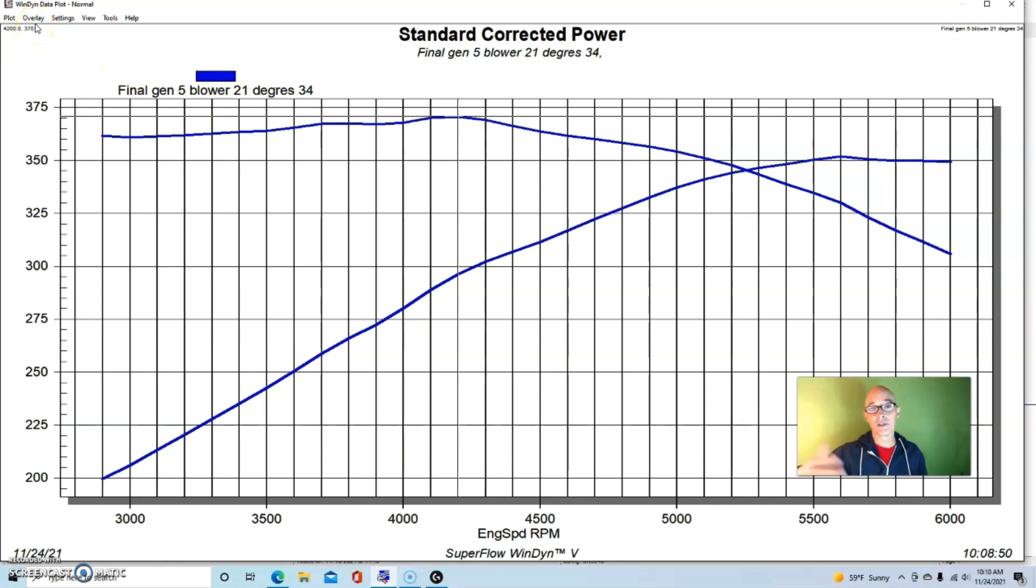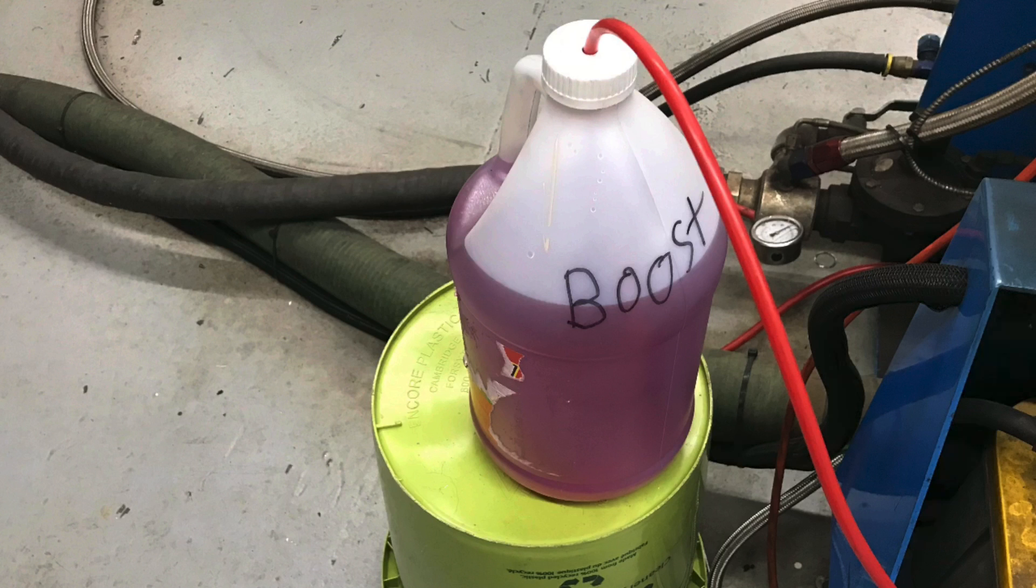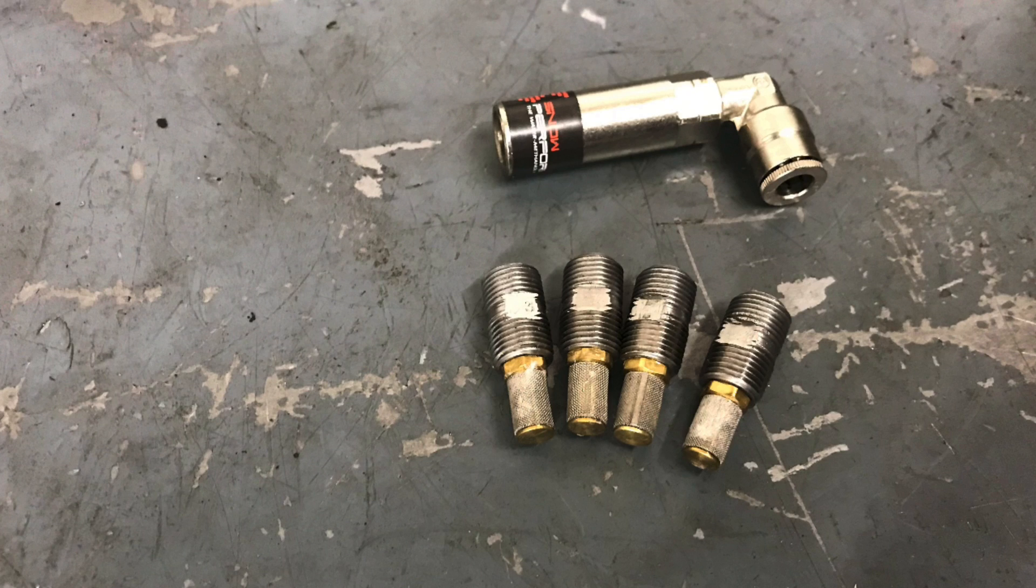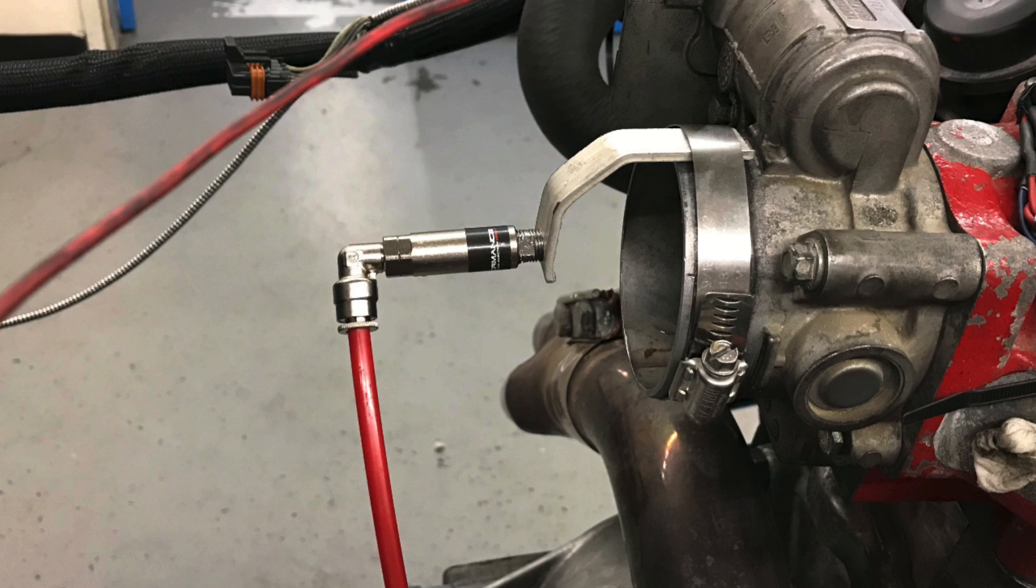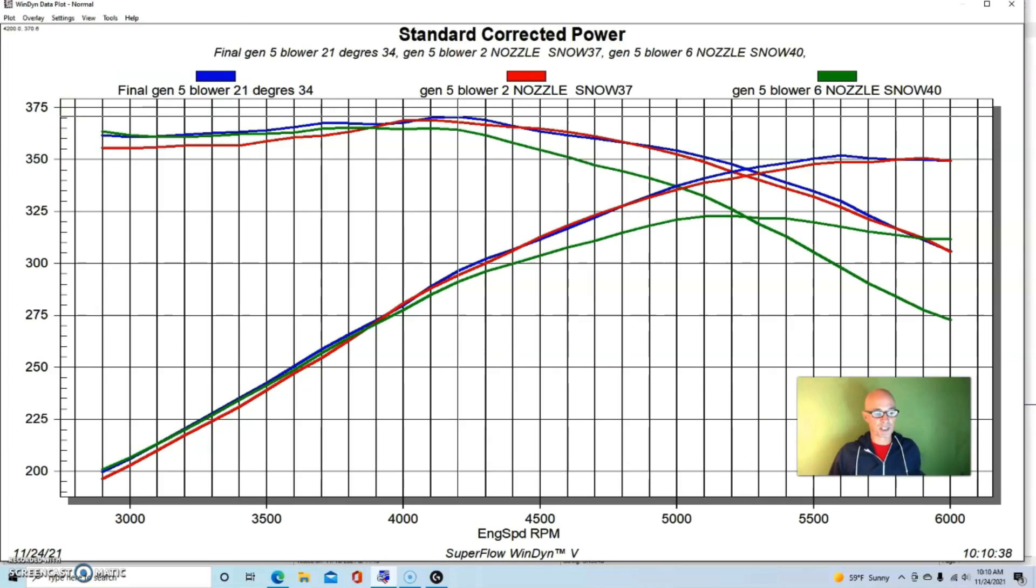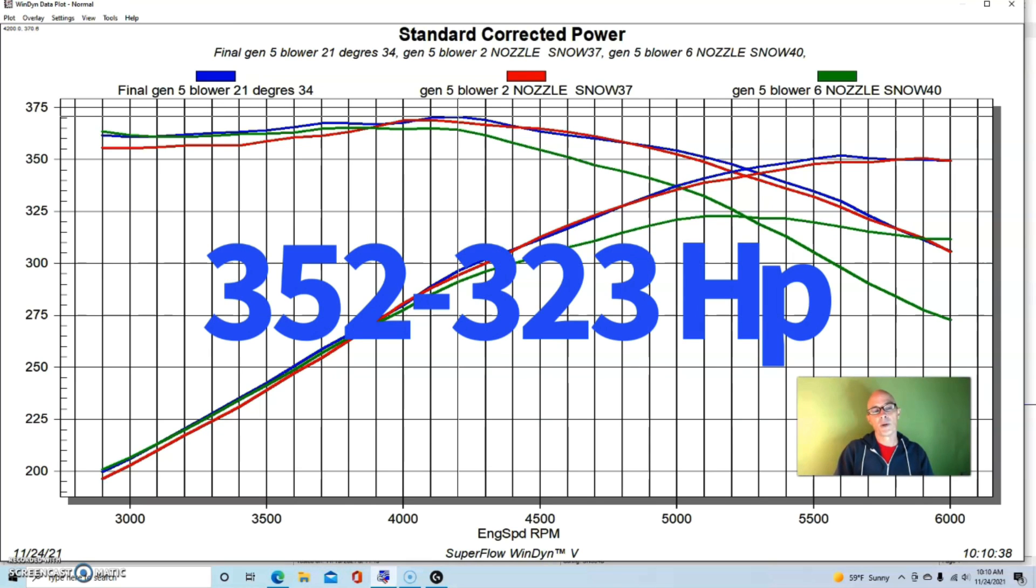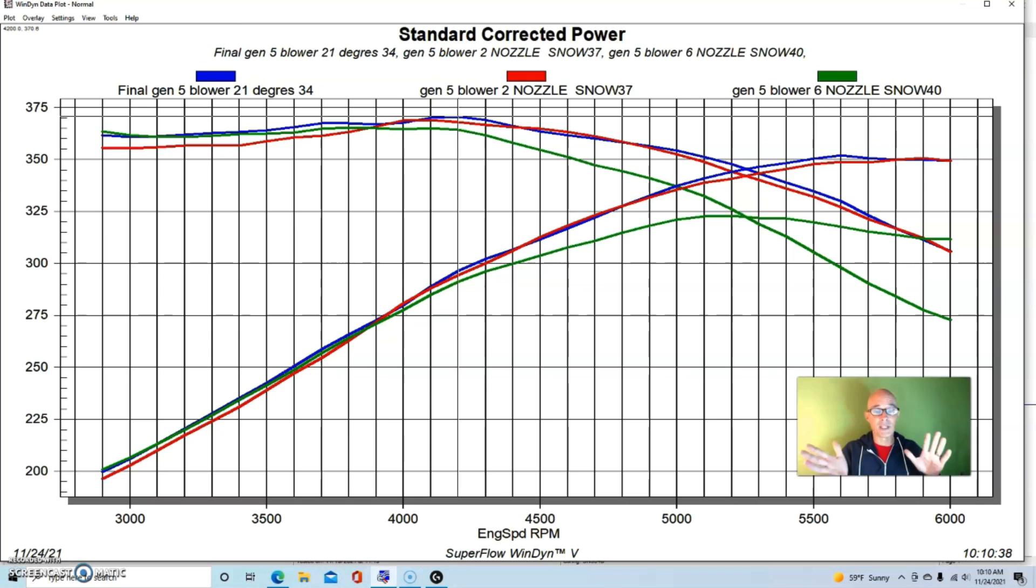And here's what happened after we added the Snow Performance Water Meth setup with the Boost Juice, and we selected a number two nozzle, which is the smallest one that we had. You can see it made very similar power down just slightly maybe compared to no Water Meth. And I'm going to show you what happened both to charge temperatures with this setup and also to the change in air fuel ratio, which is going to demonstrate why we need to retune it. And the big change here is we also installed a number six nozzle. And you can see in green the number six nozzle had a dramatic effect on the power. We lost a ton of power and I'm going to show you why. We had a lot of charge cooling, but we also had a dramatic change in the air fuel ratio, which we then had to go back in tune to get the power back up.